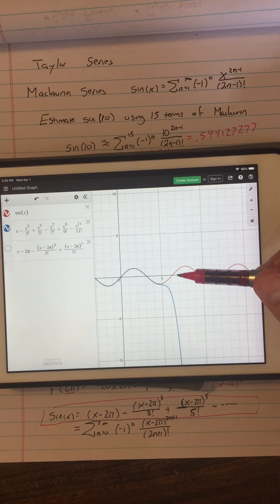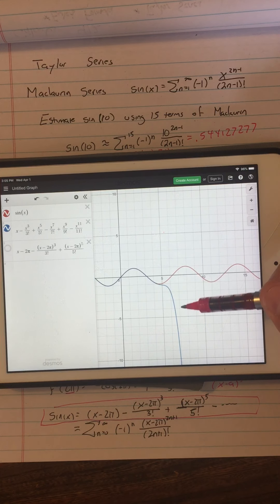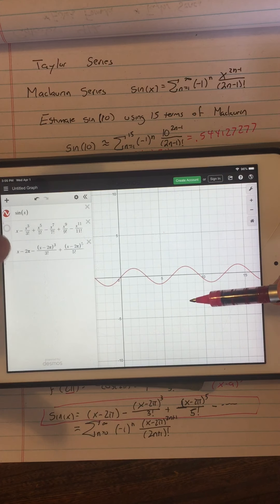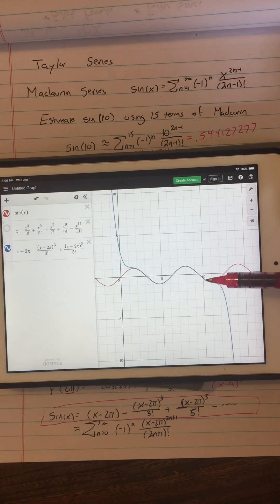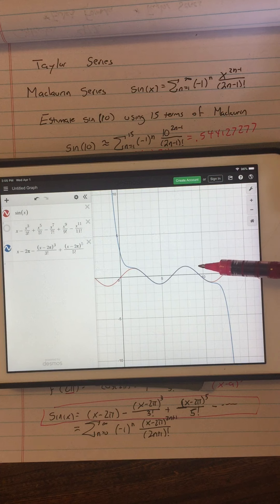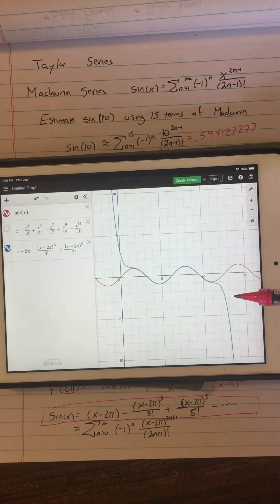Whereas, with the Maclaurin series, if I'm trying to do sin of 7, I will have terrible agreement. But with the Taylor, I have very good agreement at x equals 7. And that's all with n equals 6, so it's a very small n, but it sort of illustrates what this does.